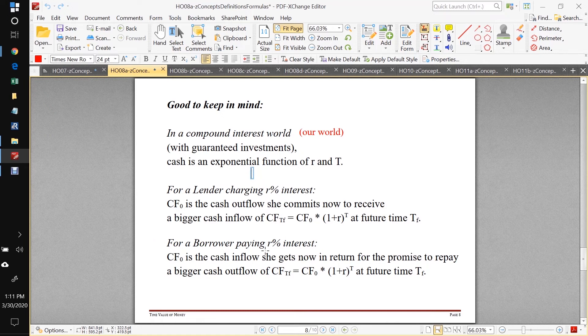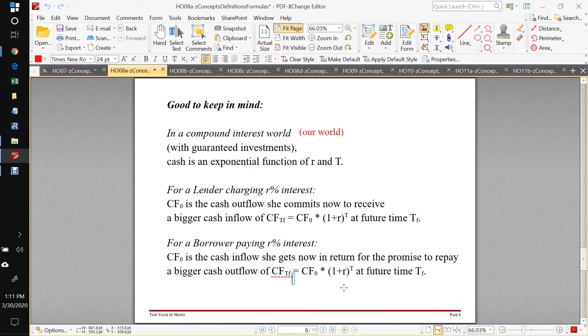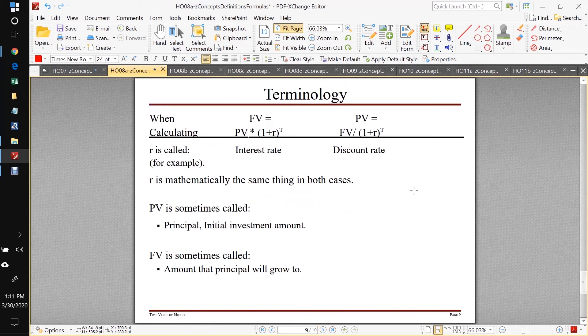For a borrower who's paying r% interest, cash flow zero is the pile of cash that she gets now in return for her promise to repay a bigger cash flow at some time tf.